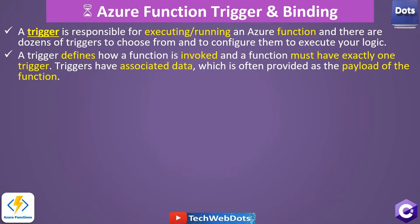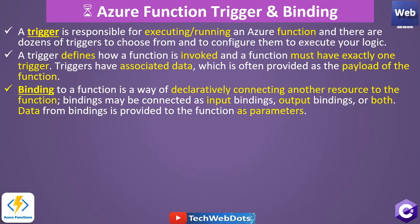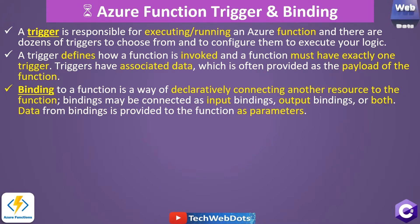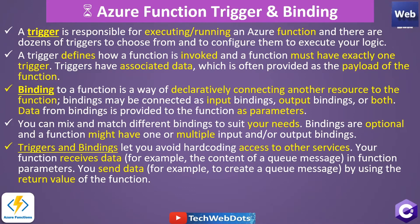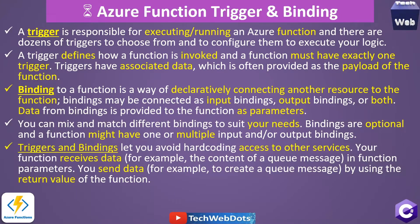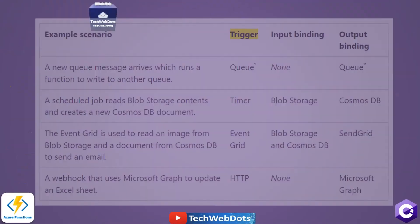Triggers have associated data which is often provided as the payload of the function. Bindings are a way of directly connecting another resource to a function — input binding provides something as input to the function, and output binding generates something from the function. Data from bindings is provided to the function as parameters. You can mix and match different bindings to suit your needs. Bindings are optional, and a function might have one or multiple input or output bindings.